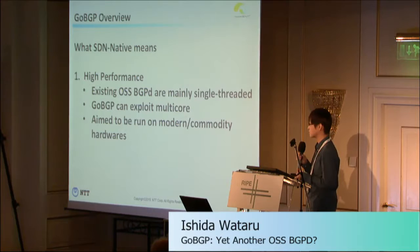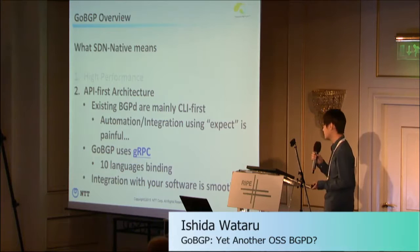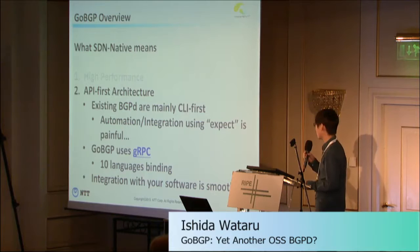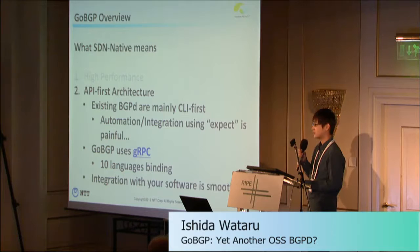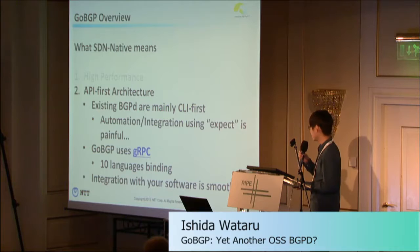The second is API-first architecture. Existing BGP implementations are mainly CLI-first, so if you want to do automation or integration, you have to use an expect library, which is very painful. GoBGP uses gRPC, an RPC framework initially developed by Google and Square. It uses HTTP/2 for the transport layer and protocol buffers for serializing, and it has 10 language bindings, so integration with your software is smooth.